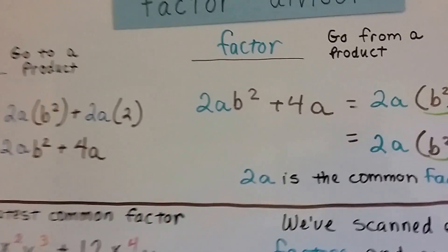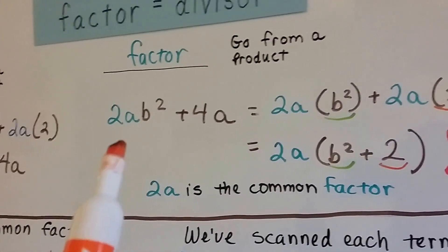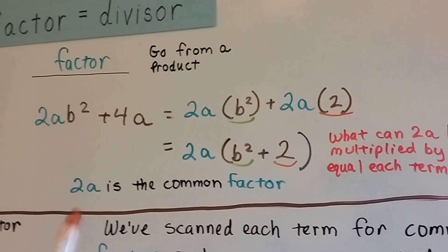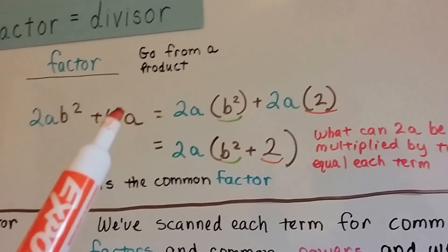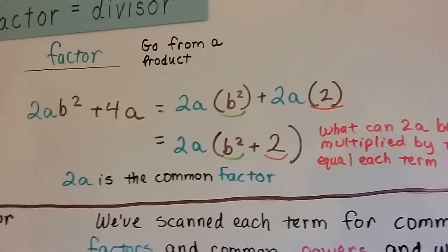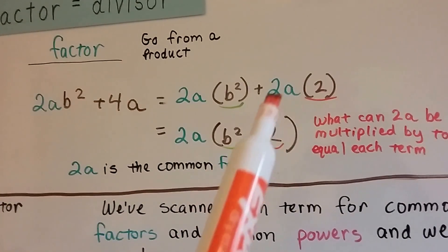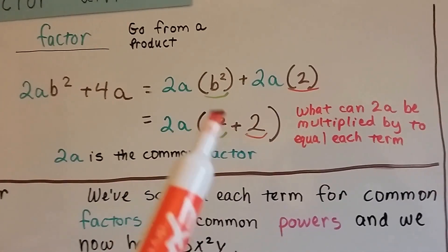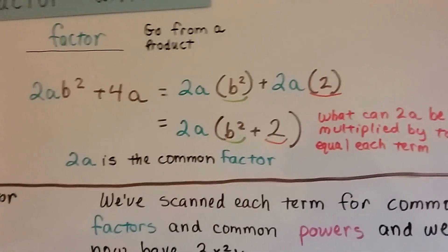If we factor, we're going to start with the product 2ab squared plus 4a, and what can be multiplied by 2a to equal this? 2a is the common factor, because this also has an a. So 2a times b squared would get us 2ab squared, and 2a times 2 would get us that 4a. We take the 2a, put one of them in front of the parentheses, and then do the b squared plus 2 inside parentheses. Now we can say we've factored out 2a.